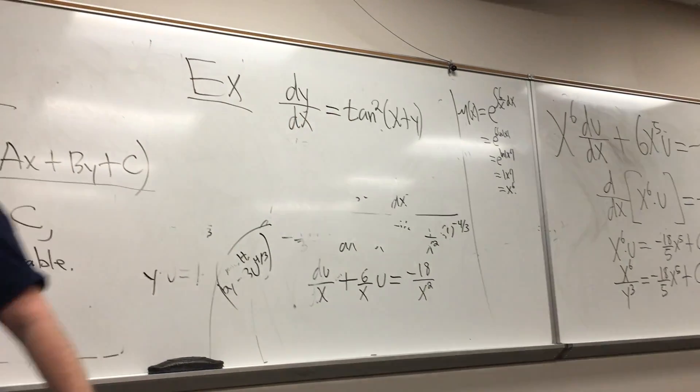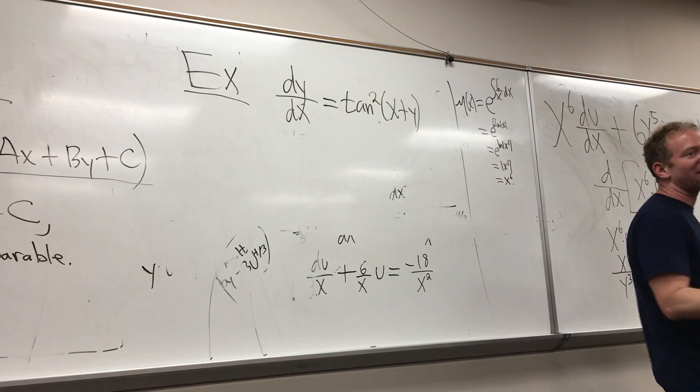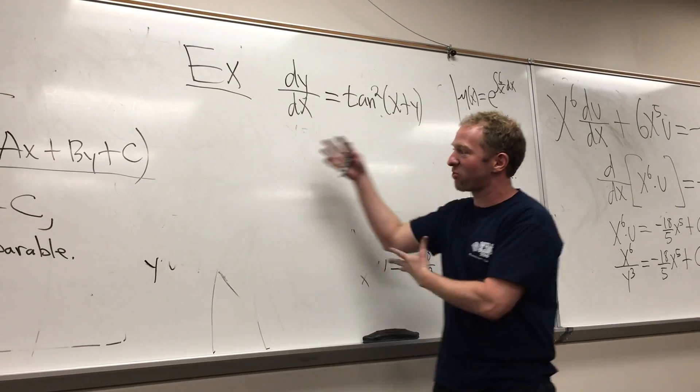So this bad boy here, this is a nice one. This is a nice little, it looks good, right? Tan squared of x plus y. What? U. Yeah, we're going to let U. It's obvious. This screams substitution, right?